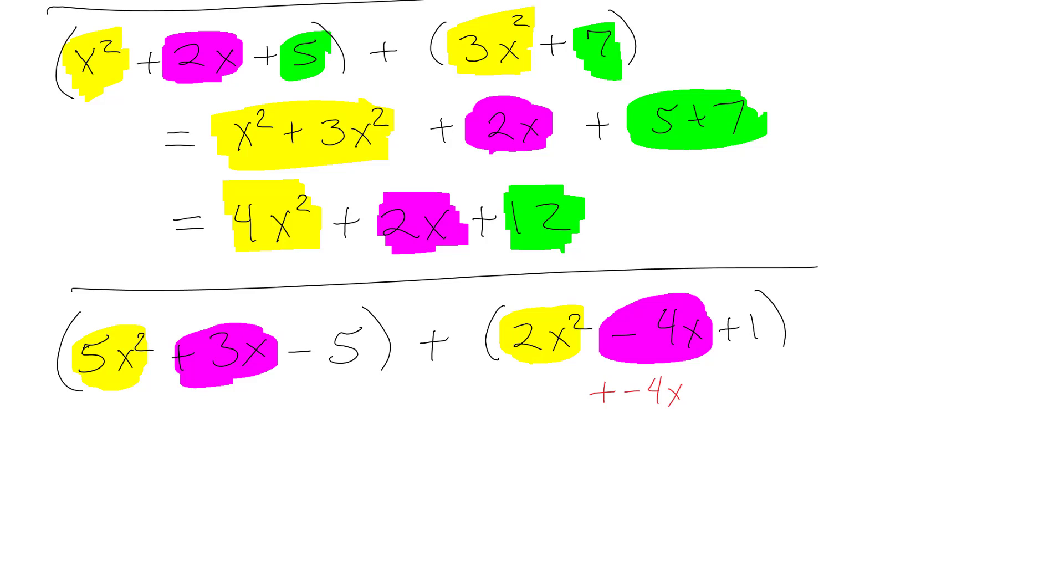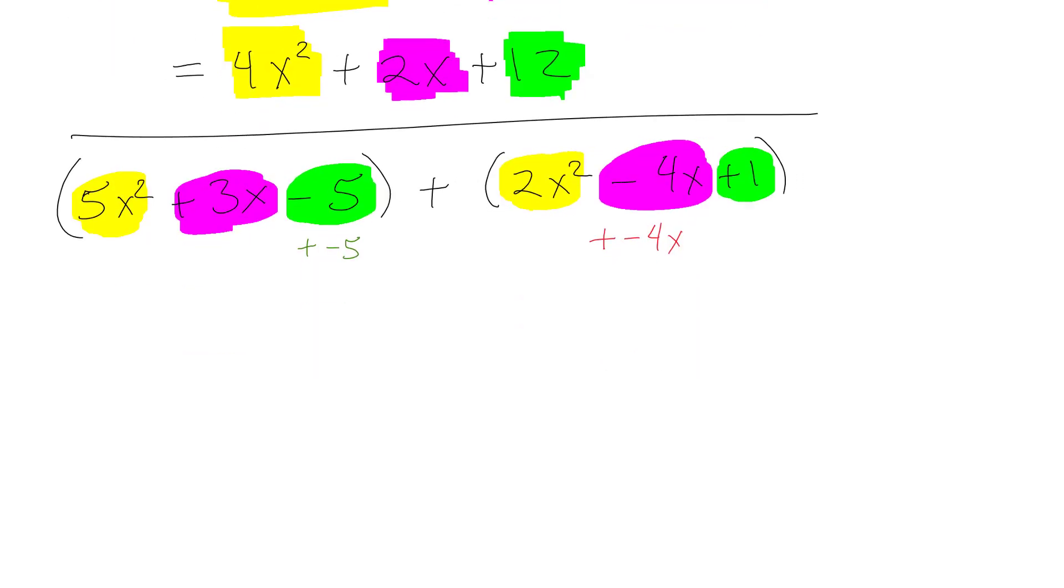Whatever makes the most sense to you is the way you need to do it. The negative 5 goes with the 1. And again, if it makes more sense to you to write the negative 5 as a plus a negative 5, that's completely valid and you'll still get the right answer. 5x squared plus 2x squared, so that's the first part. Then I'm going to add the 3x and either plus a negative 4x or just write it as minus 4x. And then we have plus a negative 5 plus 1.